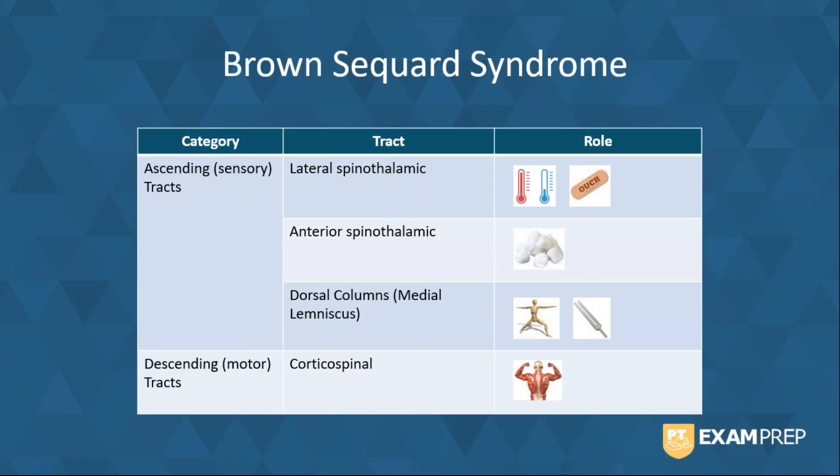Let's take a look at those spinal tracts now. There are three ascending sensory tracts that you should be familiar with. First, the lateral spinothalamic tract. This tract is responsible for carrying information about pain and temperature to the brain. We then have the anterior spinothalamic tract. This tract is responsible for carrying information about crude and light touch to the brain.